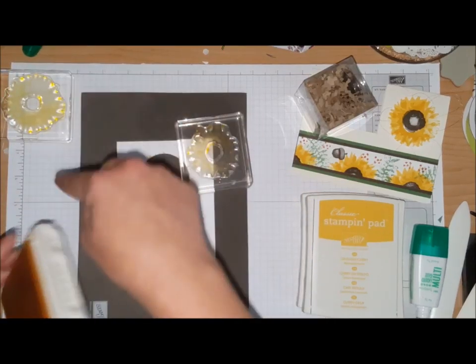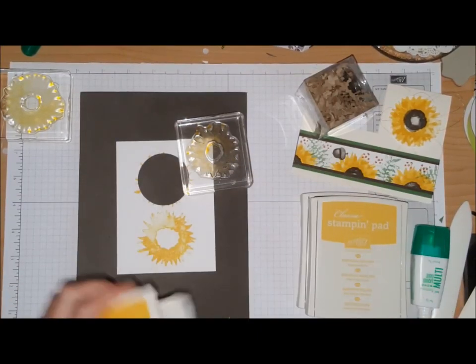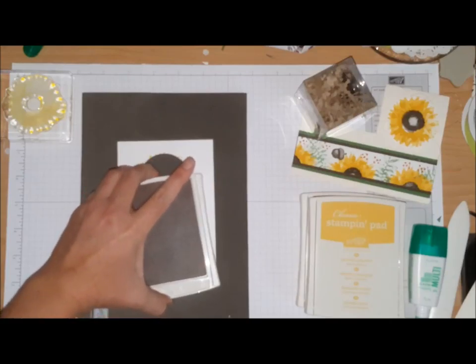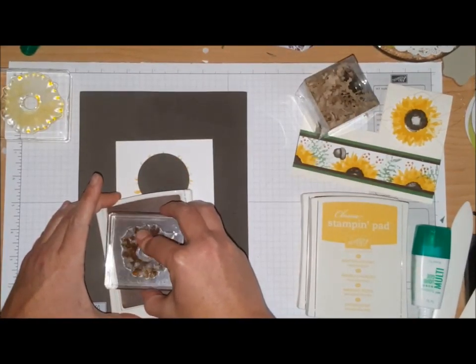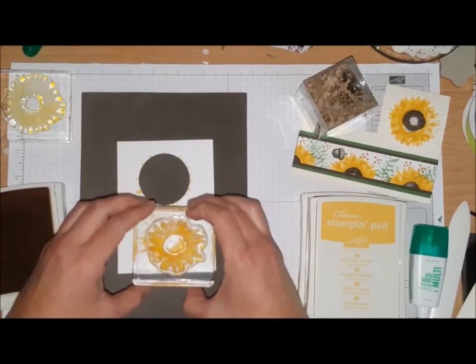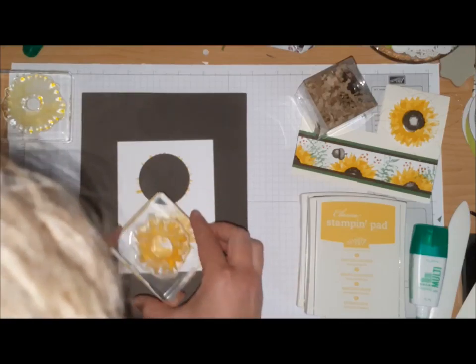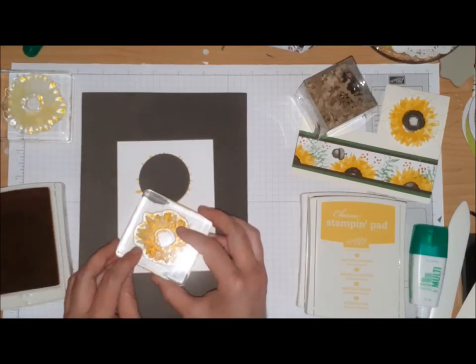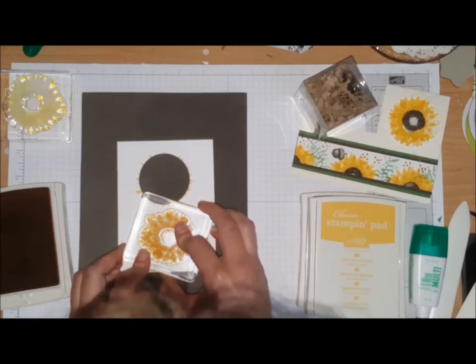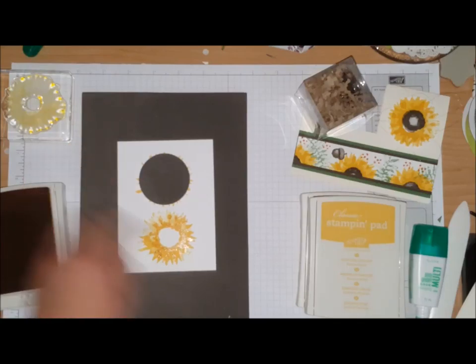But when you come with the next stamp that goes over it, it changes the look of the flower. So I now have the Crushed Curry and I'm going to go over that. You want to line up the center of the flower. You're just going to press down and you see how it kind of changes the look of the flower. How cool is that!